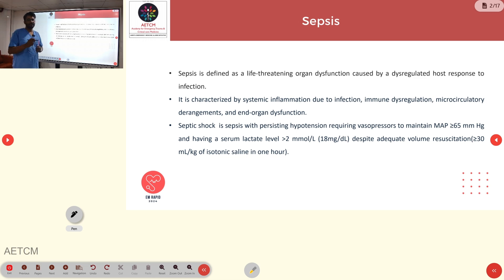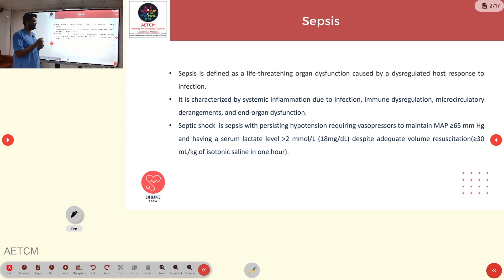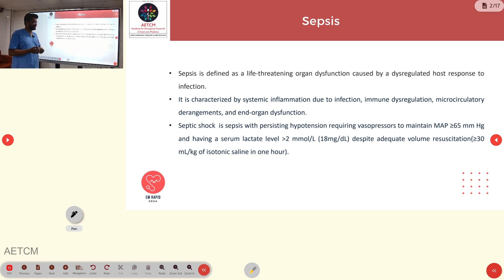Septic shock is sepsis with persisting hypotension, which will require vasopressors when we cannot maintain a MAP of 65. We use vasopressors to maintain a MAP over 65, and when there is a lactate level greater than 2. We will need adequate fluid resuscitation in cases of septic shock, and if fluid resuscitation is not adequate, we have to start with vasopressor support.